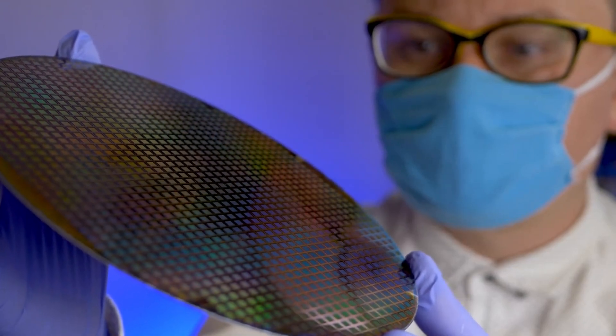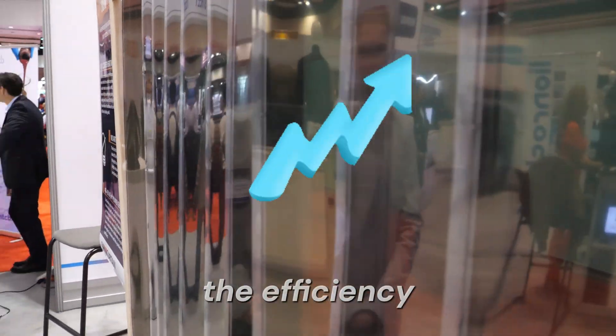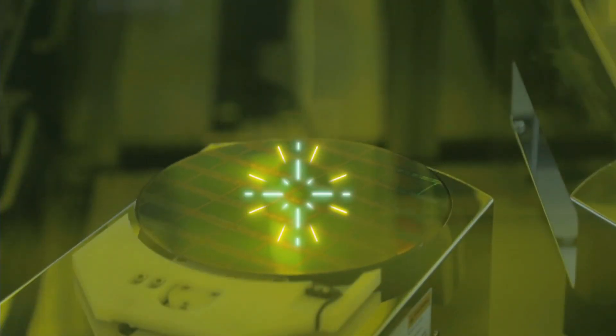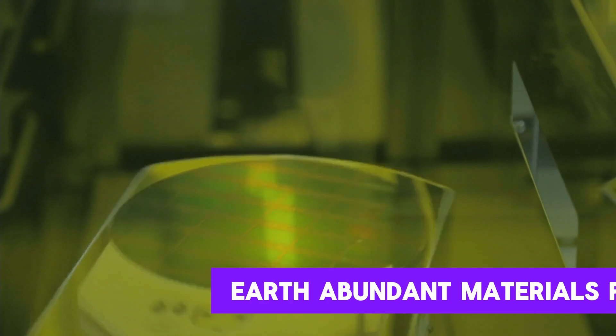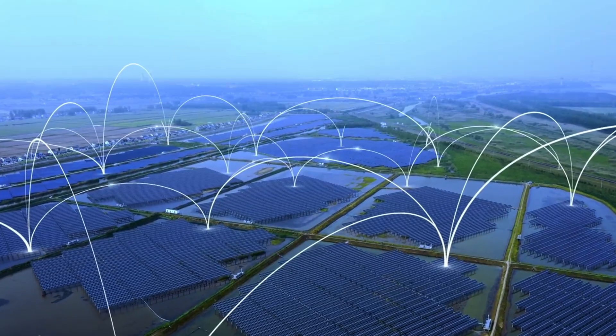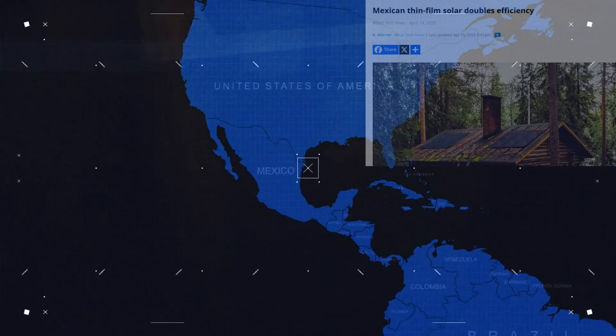What if I told you that a team of scientists just doubled the efficiency of thin film solar cells? The amazing part is the use of non-toxic, earth-abundant materials for the first time. That's right, this isn't some futuristic tech 20 years away. It's happening right now in Mexico.